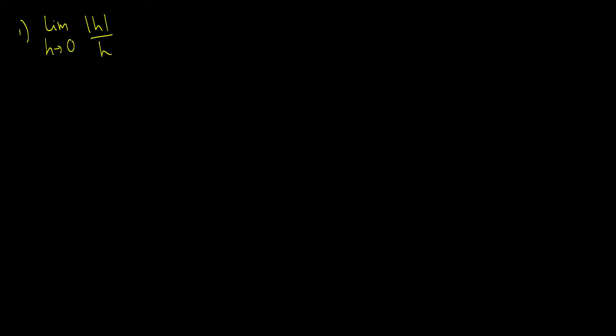Okay, so to start off, we're going to take the limit as h goes to zero of the absolute value of h over h. The first thing is: what is an absolute value? Well, the absolute value is positive if the value of x is greater than or equal to zero, and it's negative if our value of x is less than zero. So we need to take two limits, one from the right and one from the left.